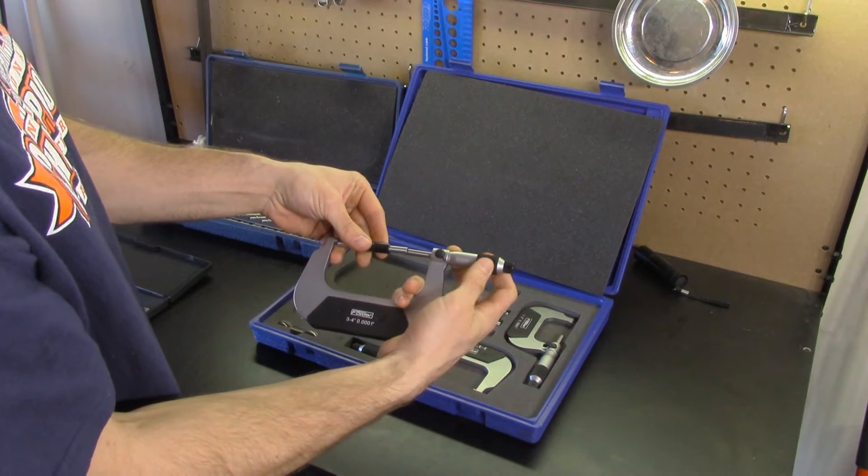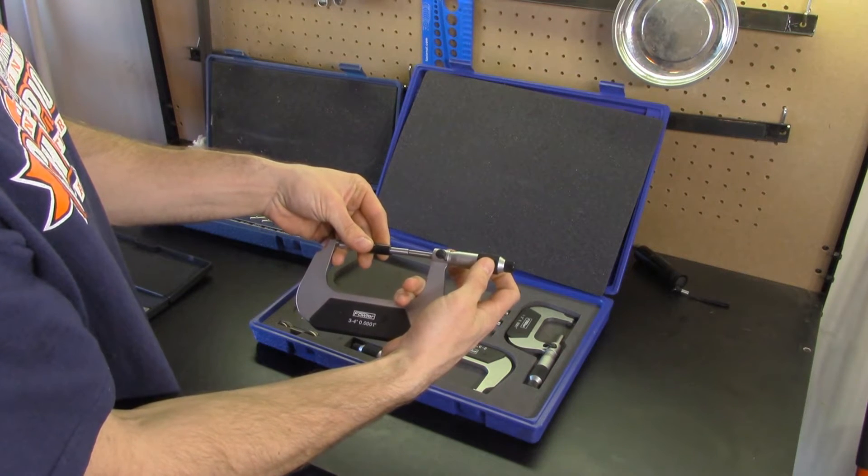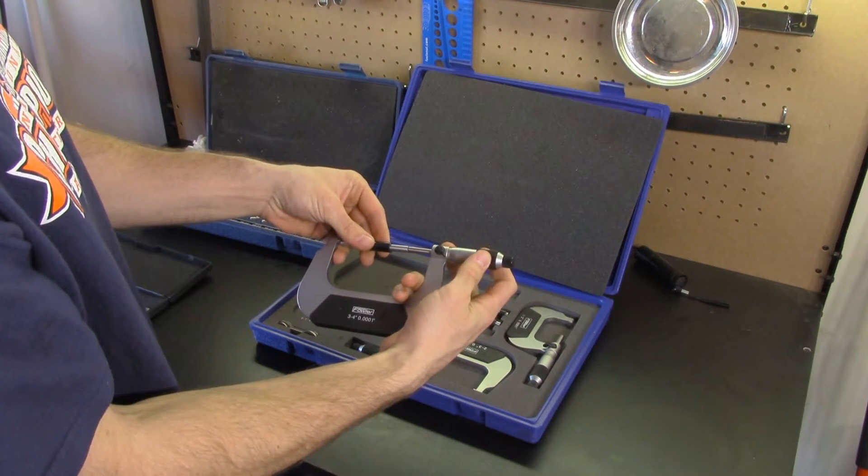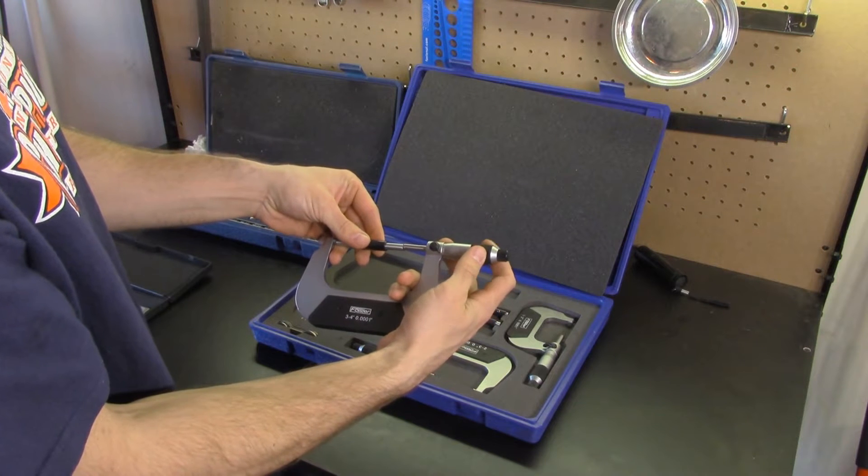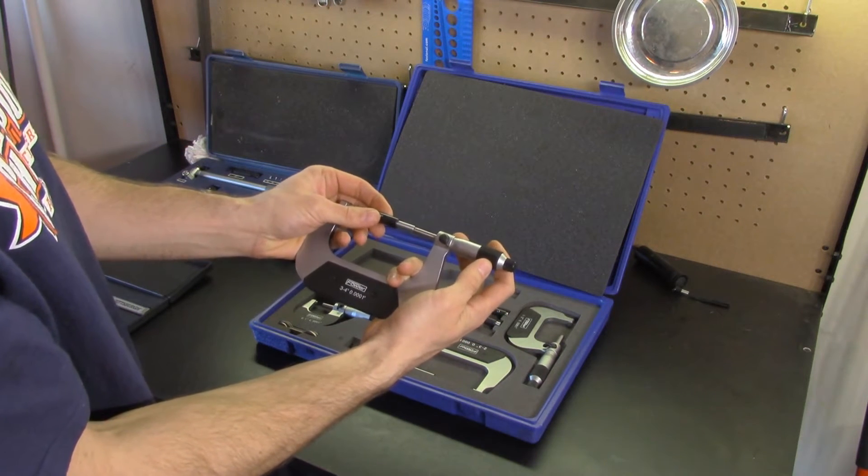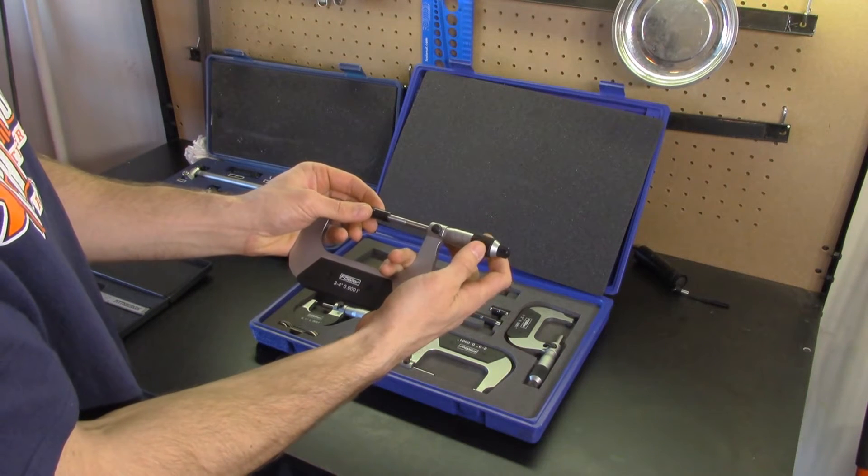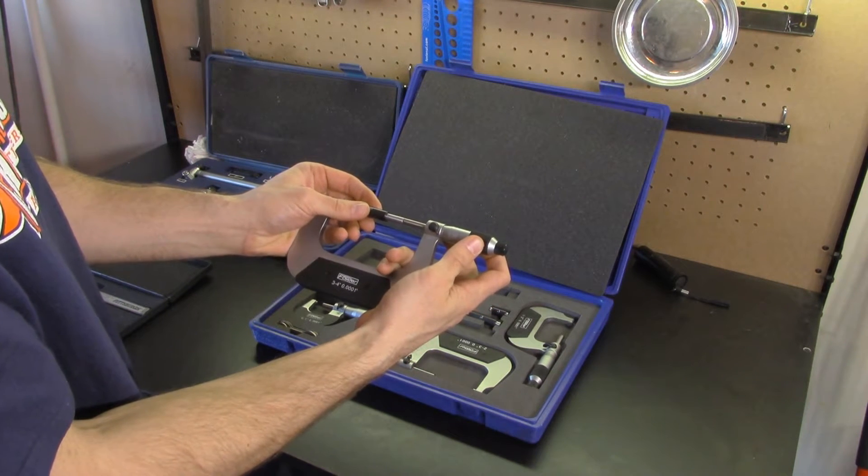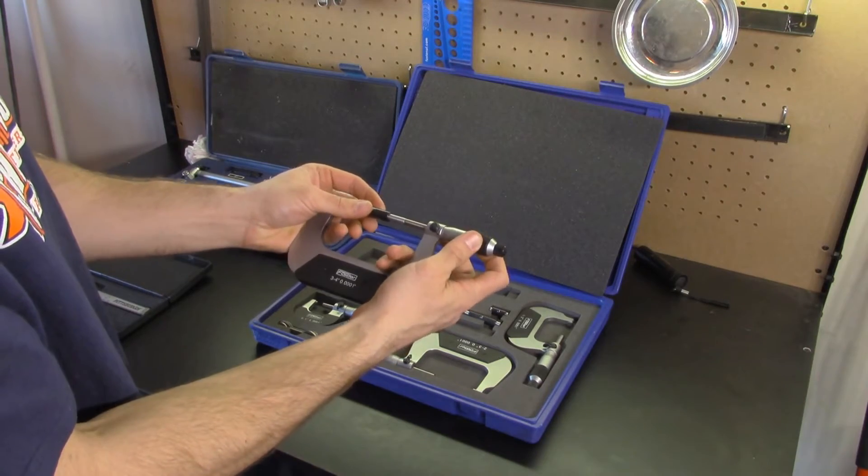To utilize one, pick up the mic that needs to be zeroed and place the standard between the anvil and the spindle, or the measuring faces. Rotate the thimble using the ratcheting stop. This clicking action allows you to provide a specific amount of torque each and every time you take a measurement, resulting in accurate and repeatable measurements.